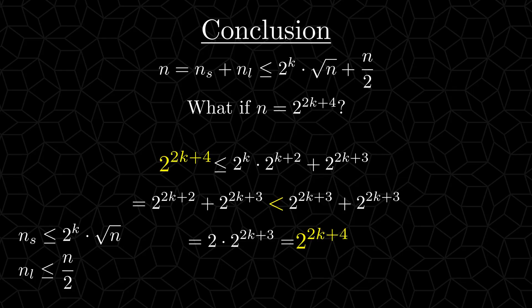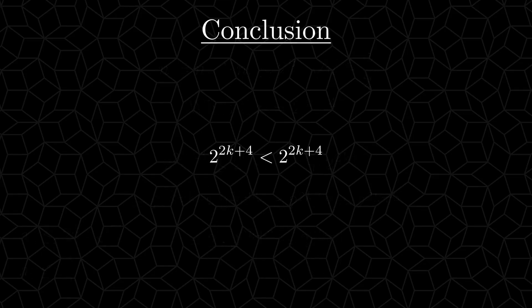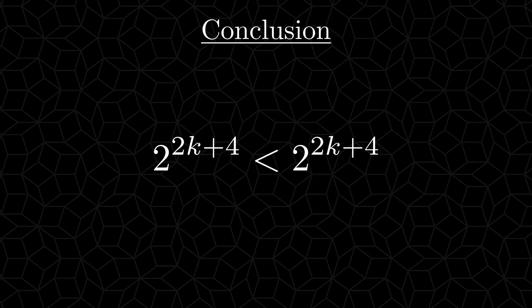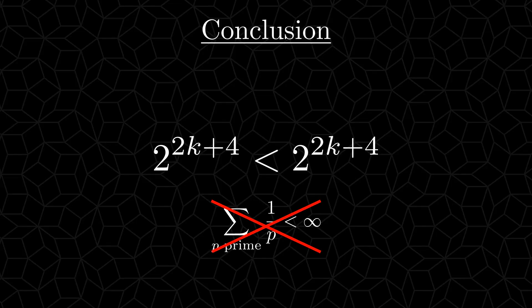But now if we look closely at this expression, and extract the most relevant parts, we can see that we have reached something that cannot be true. 2 to the power of 2k plus 4 cannot be strictly less than 2 to the power of 2k plus 4. We have reached a contradiction, and thus our initial assumption that the sum of the reciprocal of primes is finite must be false.